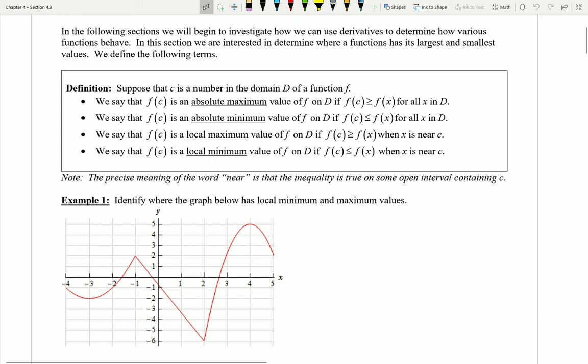Well then we would say that f of C, notice that's a y value because it's what we get when we plug C into the function and compute a result, we would say that this y value is an absolute maximum value of the function on the domain if it's the case that that y value is bigger than or equal to other y values for every single x in D.